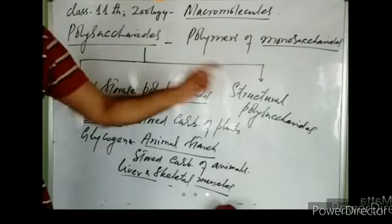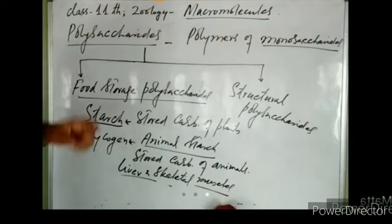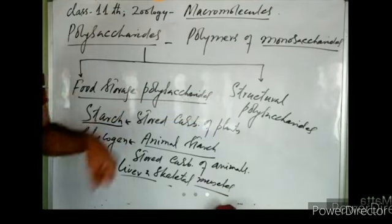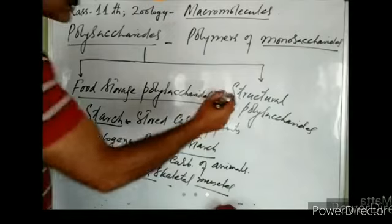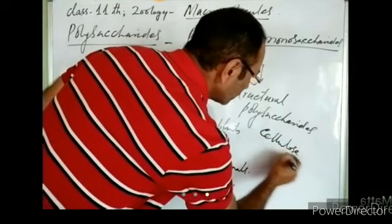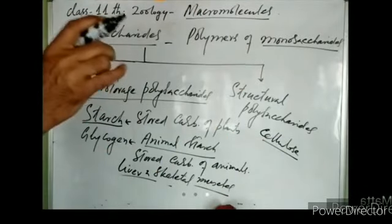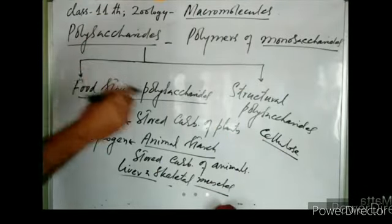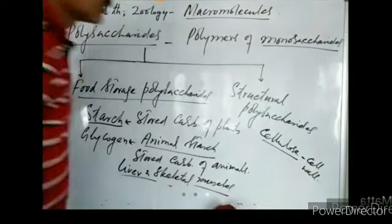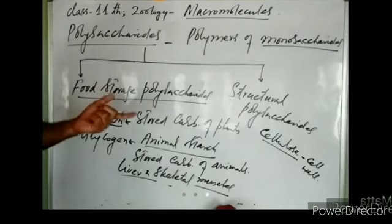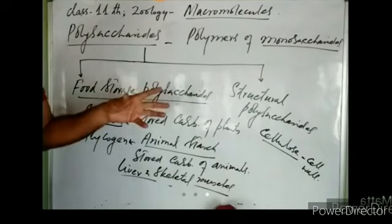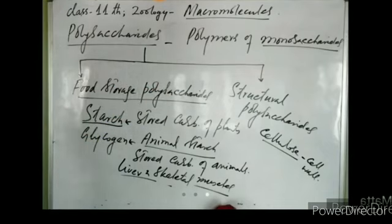Structural polysaccharides are those polysaccharides involved in the formation of body structures in plants and animals. For example, cellulose is the main component of the cell wall of plants — it is used for the formation of cell walls. So we call cellulose a structural polysaccharide because it forms cell structure.